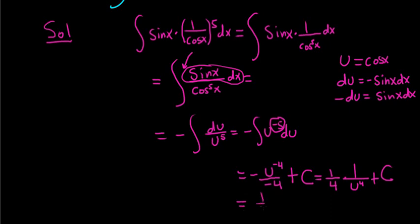This is going to be 1 fourth times 1 over cosine to the fourth power of x plus c. This is actually the secant function. If you want to be fancy, you can write this as 1 fourth. Secant to the fourth. Secant to the fourth power of x plus c.